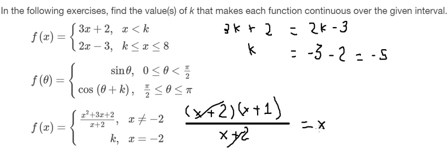X plus 2 cancels x plus 2. So we get x plus 1. Then we put negative 2 in, and we get negative 1. This is the value of k.